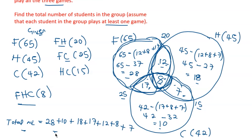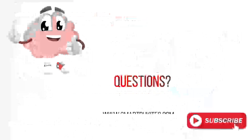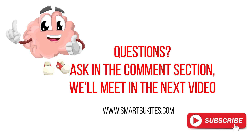Adding all those values: 28 + 10 + 18 + 17 + 12 + 8 + 7 = 100. So the total number of students who play at least one game is 100. I hope the concept is clear — if you have any questions, feel free to ask in the comment section. Goodbye!